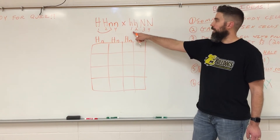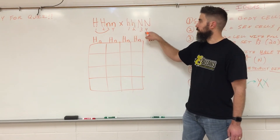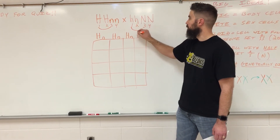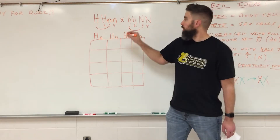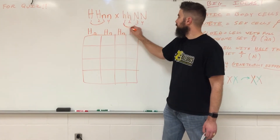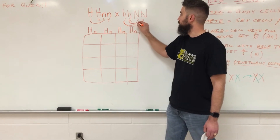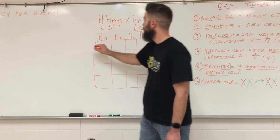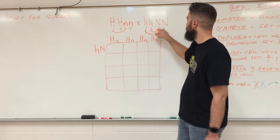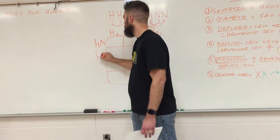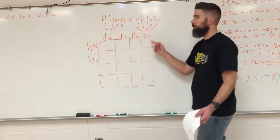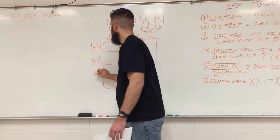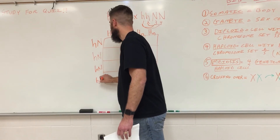Now for the other parent, same thing: one to three, one to four, two to three, two to four — there's that little pattern you can remember. So one to three is going to be little h, big N; one to four is little h, big N; two to three is little h, big N; two to four is little h, big N. Once you get used to it, it's going to be the same thing every time.